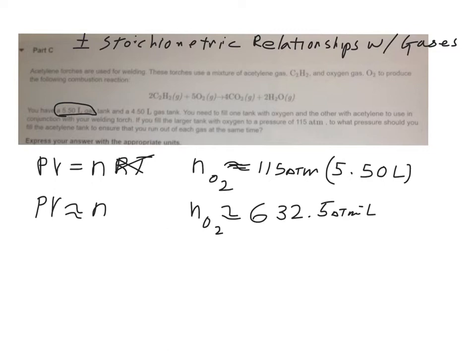Now we have to do our stoichiometry because this equation doesn't use acetylene and oxygen in a one-to-one ratio. We're going to use this as a substitute for moles. The 632.5 atm liters, we're going to use that as a stand-in for our number of moles. So I have 632.5 atm liters of oxygen and according to my chemical equation, for every 5 moles of oxygen I have I need 2 moles of acetylene.